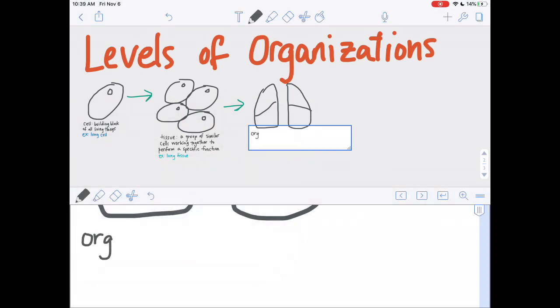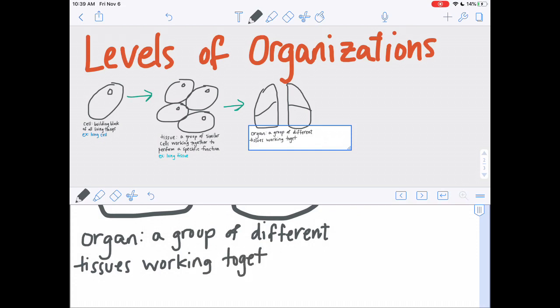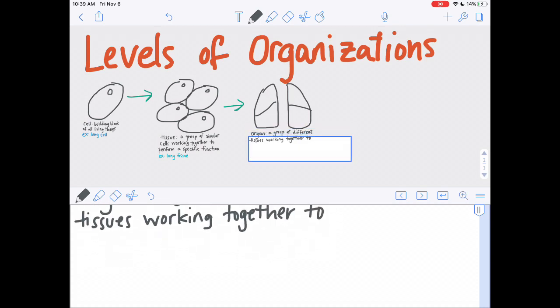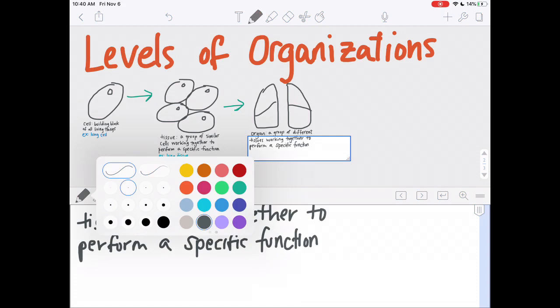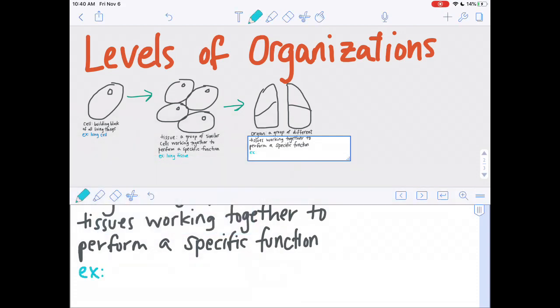So cells make up tissues and tissues make up organs. And an organ is a group of different tissues working together to perform a specific function. So like I said before, there's a lot of different types of tissue inside your lungs and they all work together to make your lungs.